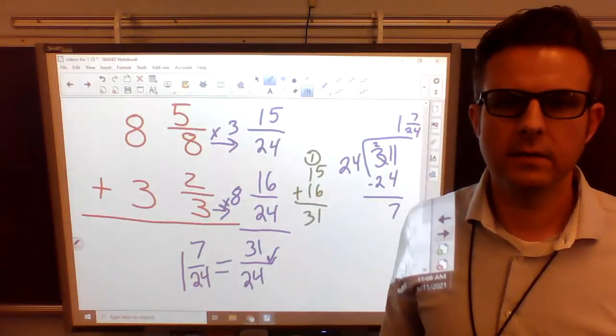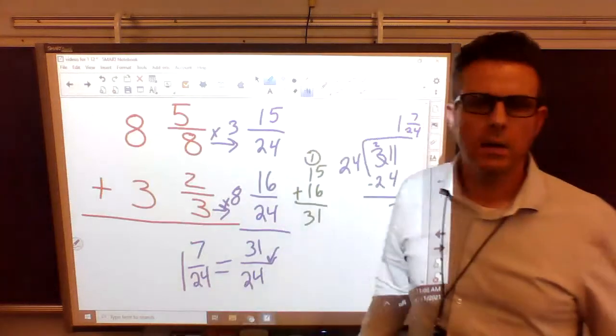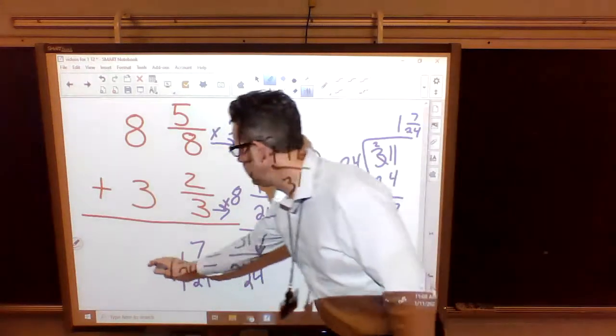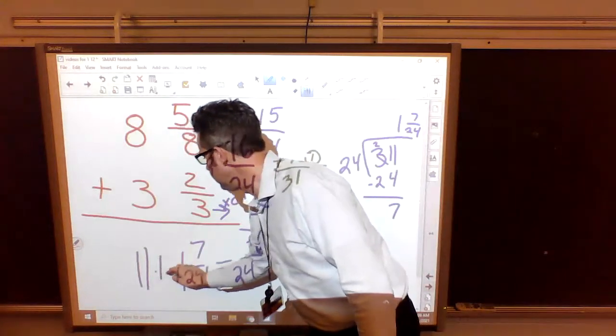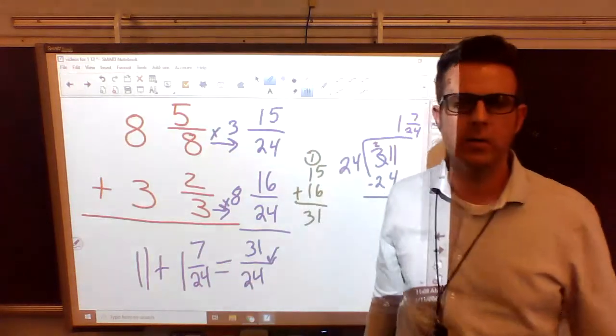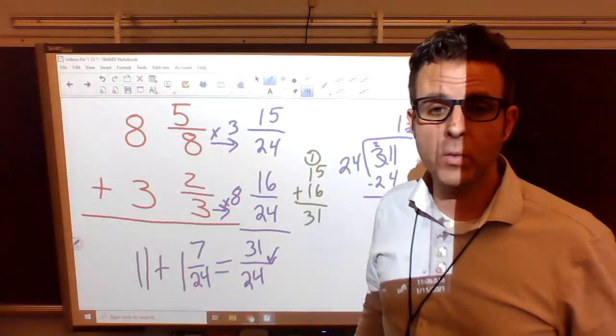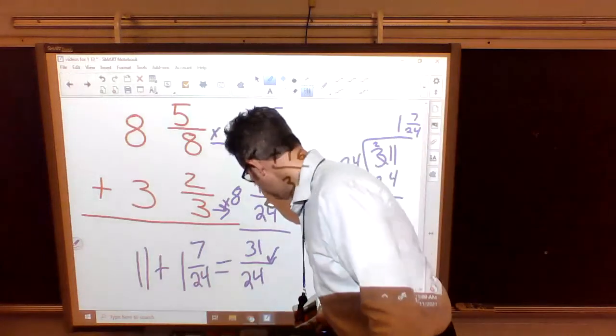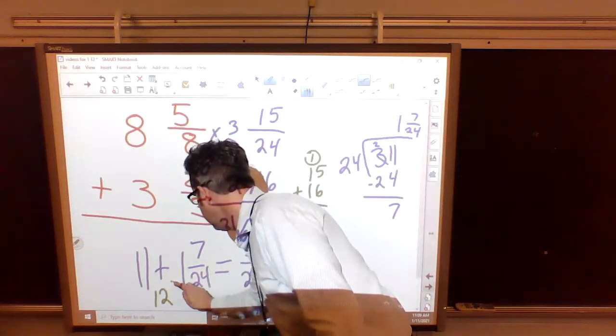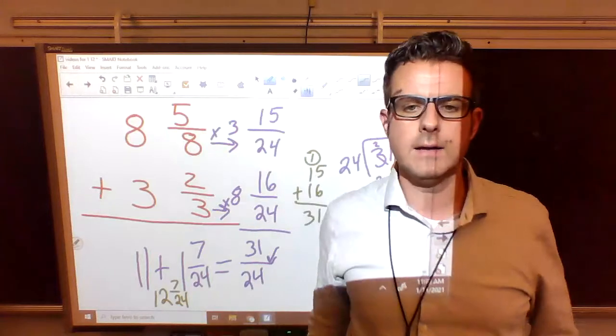We're not finished yet. We haven't added our whole numbers. So what is 8 plus 3? 8 plus 3 is 11. So we're really left with 11 plus our fraction, which is 1 and 7/24. Now we have to put them together. What is 11 plus 1? I'm going to write it in a different color so that you can see it. 11 plus 1 is 12, and 7/24 is our final answer.